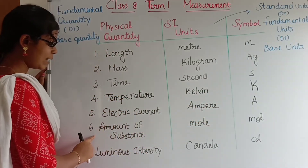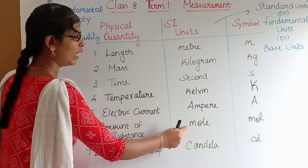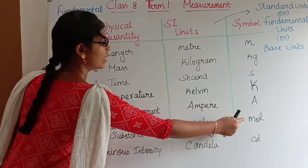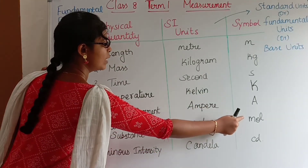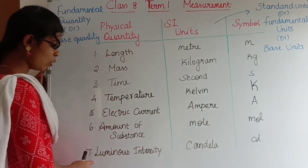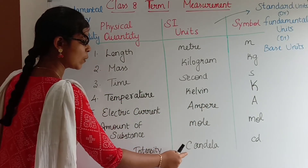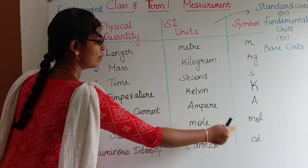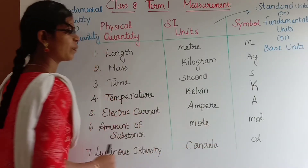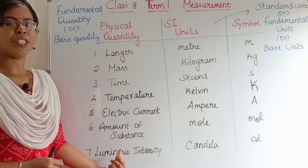Next is amount of substance — its SI unit is the mole, with symbol mol. Next is luminous intensity — its SI unit is the candela, with symbol cd. These are the 7 physical quantities with their corresponding units and symbols.